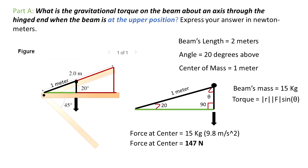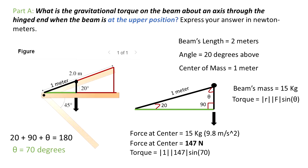I changed the color of the radius from the hinged end to the center of mass to black. Gravity acts completely downwards. This right triangle has 20 degrees above the horizontal and 90 degrees. From this we can calculate: 20° + 90° + θ = 180°, so theta is 70 degrees. 70 degrees is the angle between the radius and the force of gravity. Torque is defined as the magnitude of the radius multiplied by the magnitude of the force, multiplied by the sine of theta — the angle between the radius and the force.